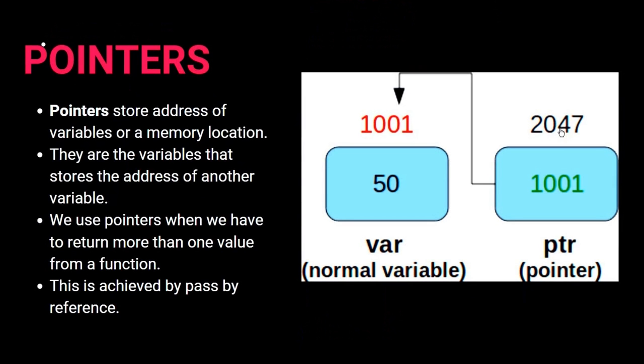Pointers are a key concept in C. They are variables that store the address of another variable or memory location. Pointers are used when you have to return more than one value from a function, achieved by pass by reference.